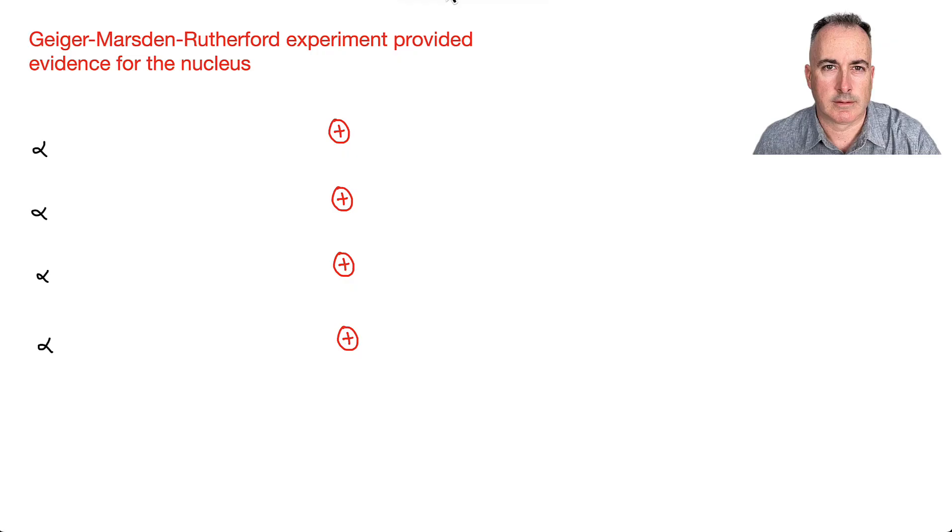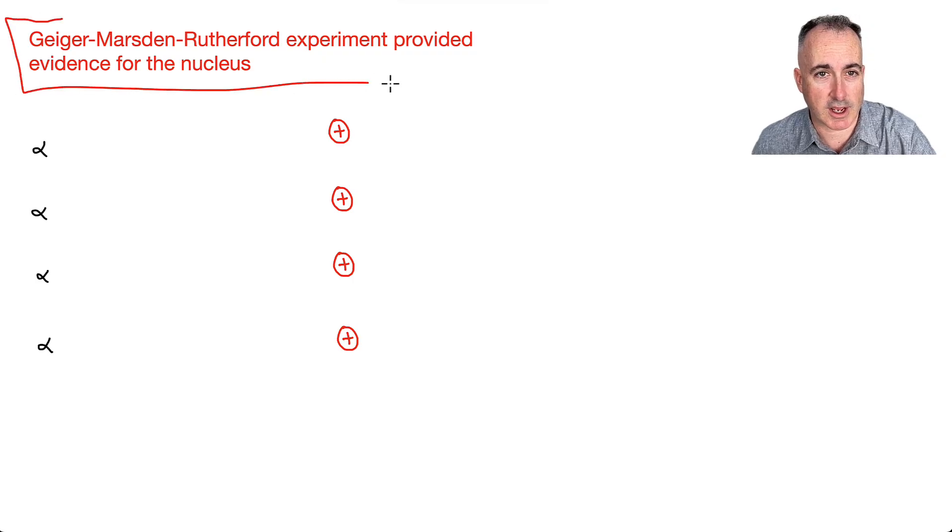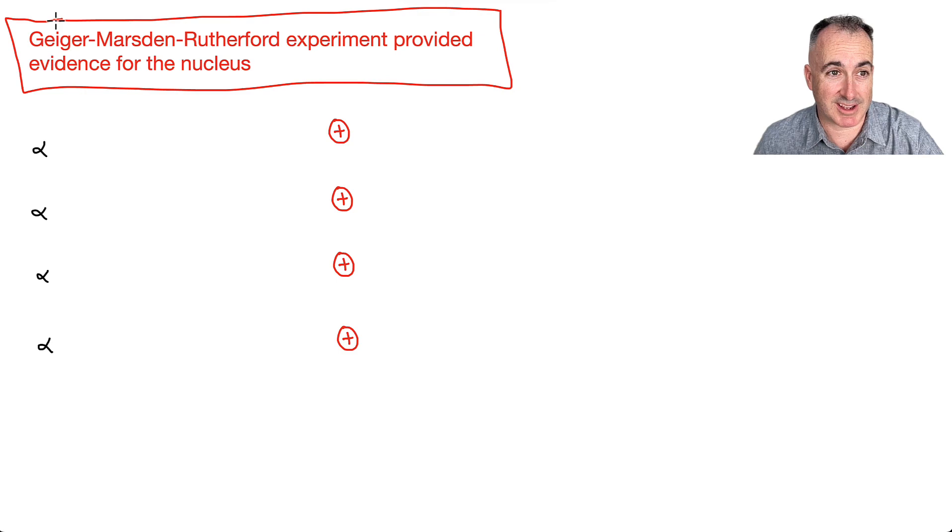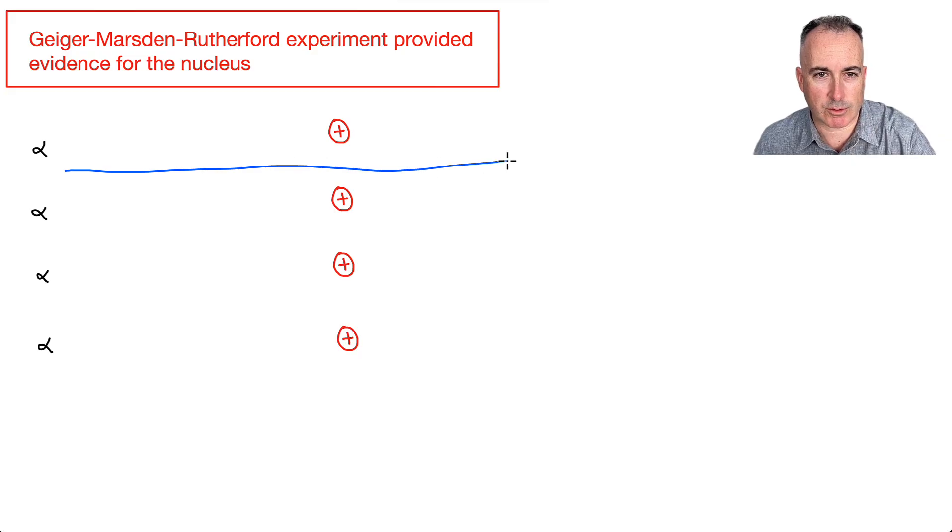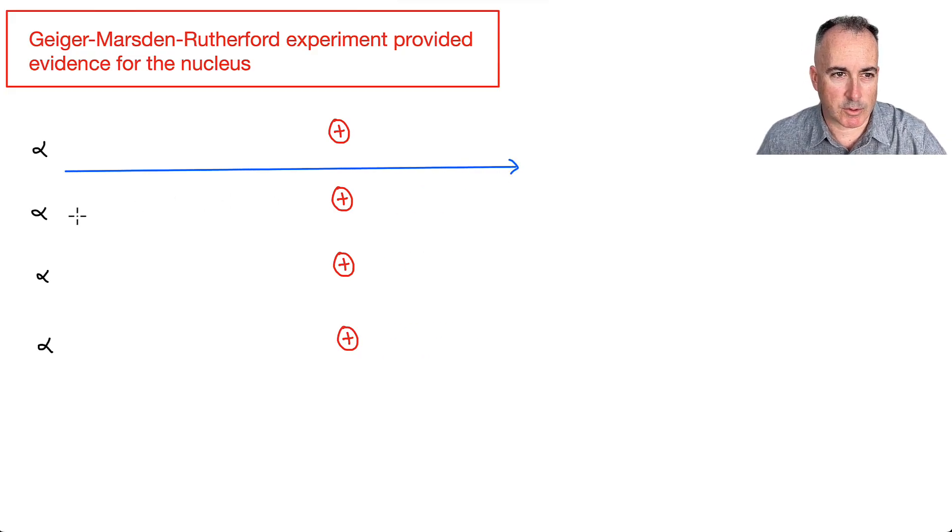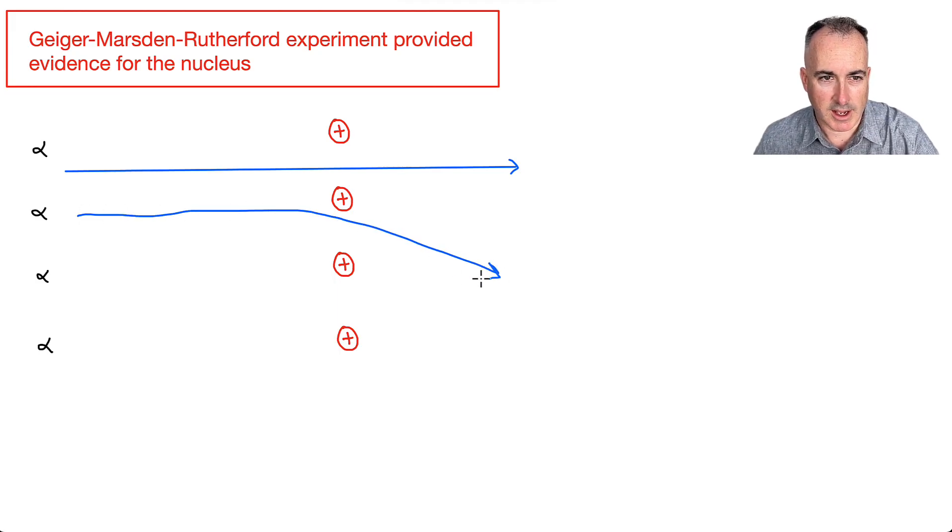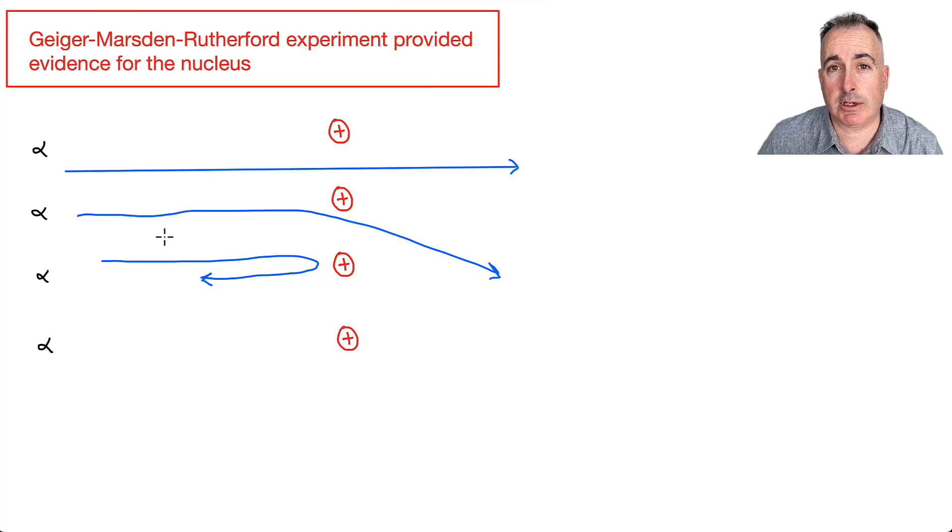Just to make this drawing, I'm going to draw what we just saw. This Geiger-Marsden-Rutherford experiment was evidence that the atom has a nucleus. Some alpha particles went straight through undeflected. Some were deflected a little bit. And some even went straight back. These are the different paths you need to know for exams.